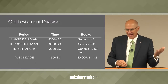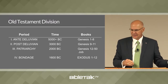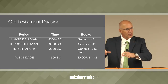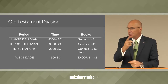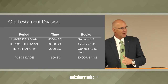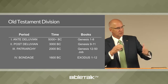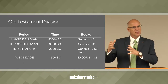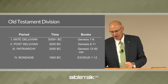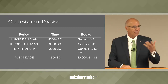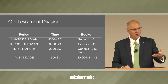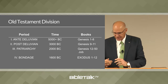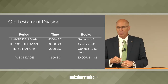The first period is the Antediluvian — meaning before the Flood — 5,000-plus years before Christ, covered by Genesis chapters 1 to 8. The second, the post-Diluvian or after-the-Flood period, around 3,000 B.C., is covered by Genesis chapters 9 to 11. Third is the patriarchy — the fathers: Abraham, Isaac, and those people — around 2,000 B.C., covered by Genesis chapters 12 through 50 and the book of Job.